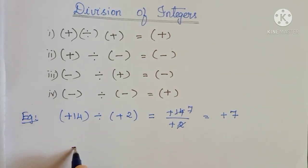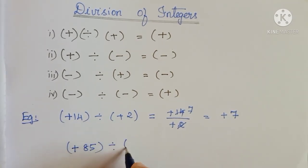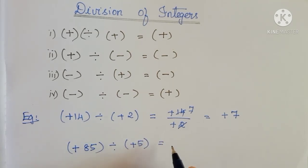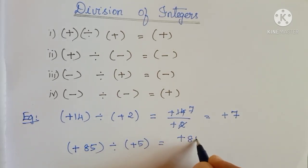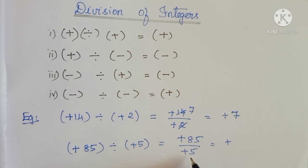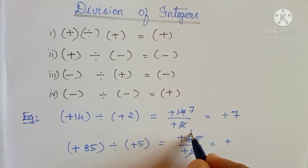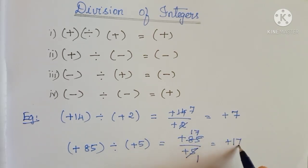I will take one bigger number: plus 85 divided by plus 5. So, plus divided by plus is plus — 85 and 5, both cancel by 5 table. Using the test of divisibility, here 5 appears in the ones place, so we can say this number is a multiple of 5. Using the 5 times table, we cancel these two. 5 one time, reminder 35, 5 seven times — so the answer is plus 17.